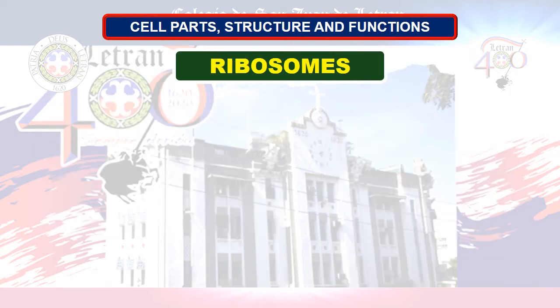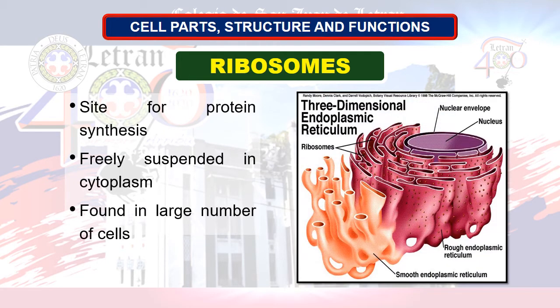Next, we have ribosomes. A ribosome is a particle present in large numbers in all living cells, and serves as the site of protein synthesis. Ribosomes occur both as free particles in prokaryotic and eukaryotic cells, and as particles attached to the membranes of the rough endoplasmic reticulum in eukaryotic cells.